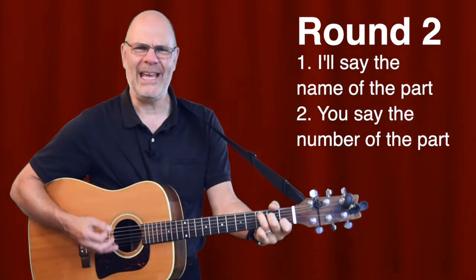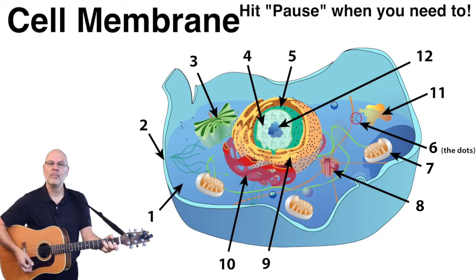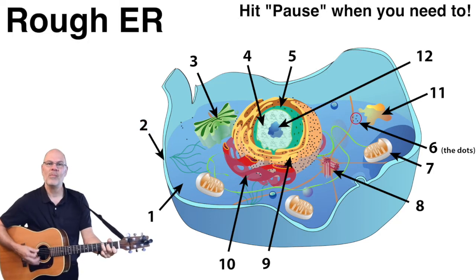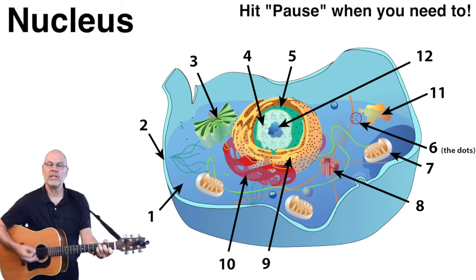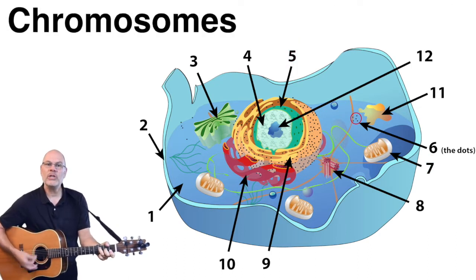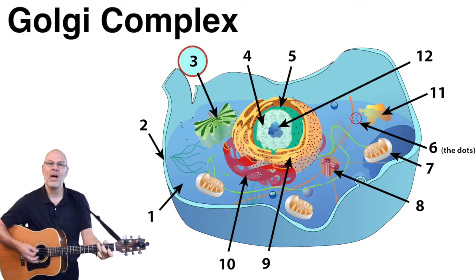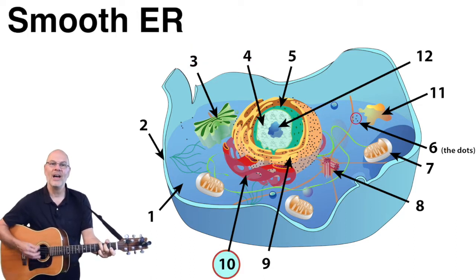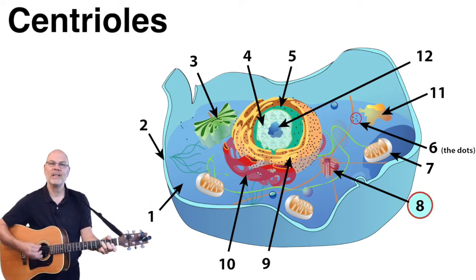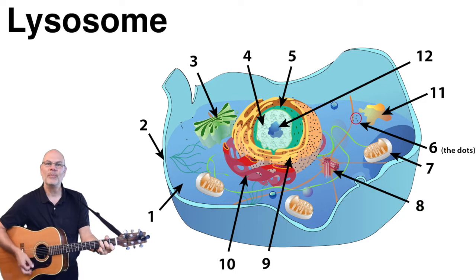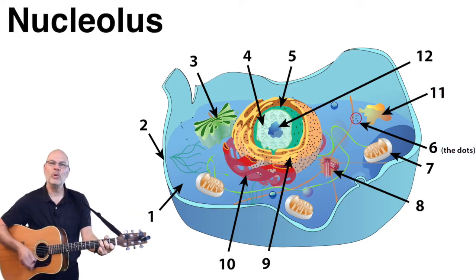Let's go. Are you ready to play? The cell membrane. The rough ER. The mitochondria. The nucleus. The chromosomes. The Golgi complex. The smooth ER. The cytoplasm. The centrioles. A lysosome. The ribosomes. The nucleolus.